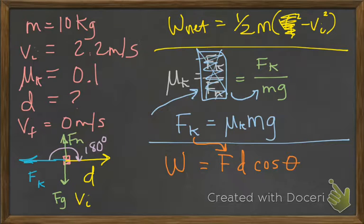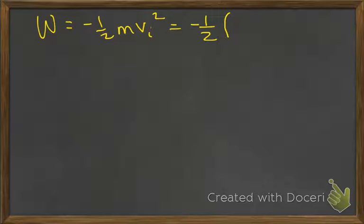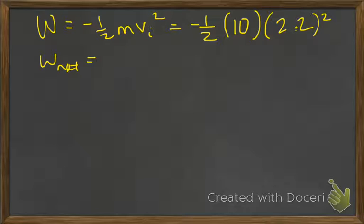VF is zero, so that negative is moved to the beginning. Plug in your information — mass was 10 kilograms, velocity initial was 2.2, and that number is squared. What do you get for work? Negative 24.2 joules.